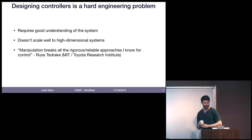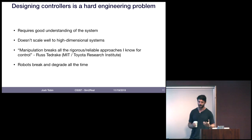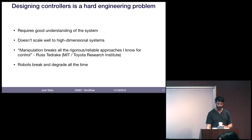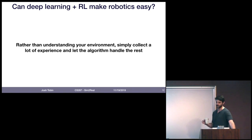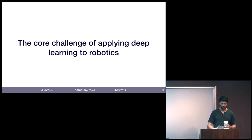Designing controllers for robotics is a really hard engineering problem. You need to understand the system the robot is interacting with very well, and it doesn't always scale to high dimensions. As Russ Tedrake at MIT put it, manipulation breaks all of the rigorous and reliable methods for control that we know about. And once you do get your controller, your robot is going to break, degrade, and sensors are going to fail. So I was really excited about deep reinforcement learning applied to robotics — the hope being that rather than spending a ton of time understanding the environment, we can just collect a lot of experience and let the algorithm handle the rest.